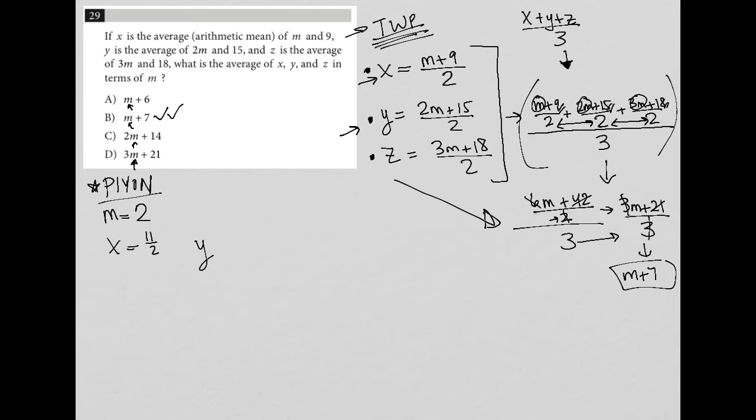instead of 2m plus 15, it's going to become 2 times 2, which is 4, plus 15, which is 19 over 2. And for z, instead of 3m plus 18, I'm going to have 3 times 2, which is 6, plus 18, which is equal to 24 over 2. When I simplify that, I get x equals 5.5, I get y equals 9.5, and I get z is equal to 12.